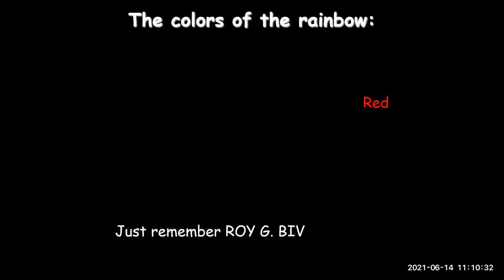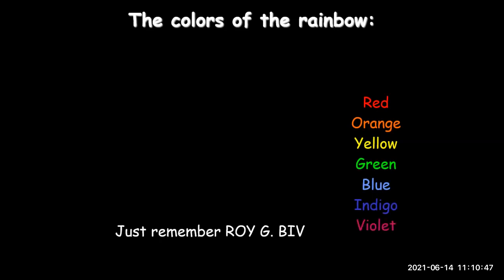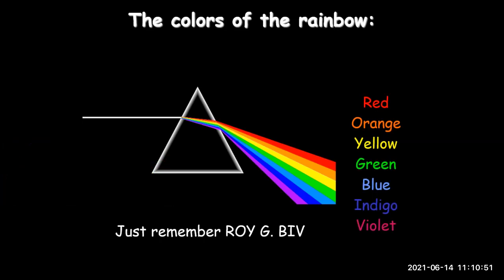To remember the colors of the rainbow, remember ROYGBIV. R is for red, O for orange, Y for yellow, G for green, B for blue, I for indigo, and V for violet. So the order of colors is: red, orange, yellow, green, blue, indigo, violet. Just remember Roy G. Biv.